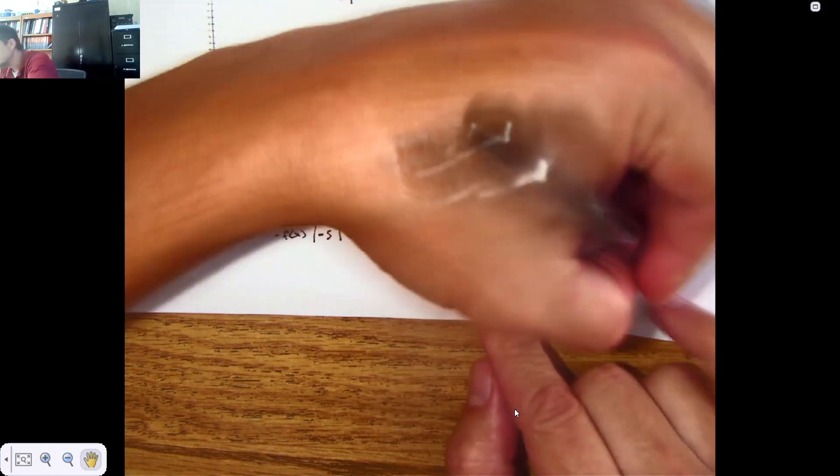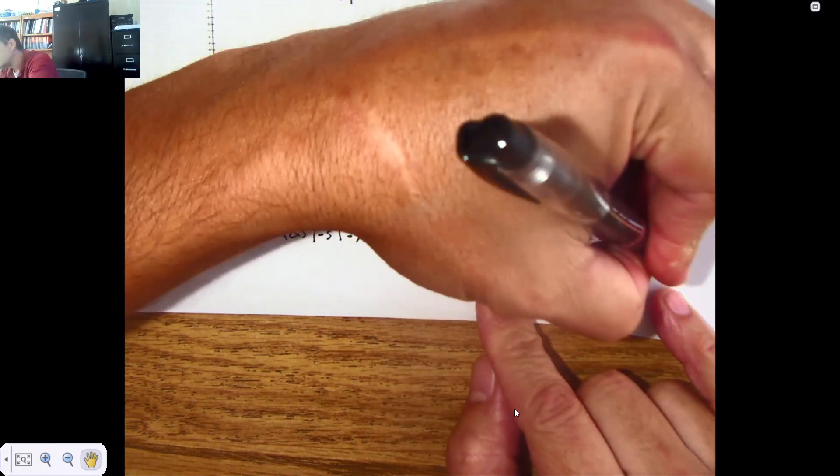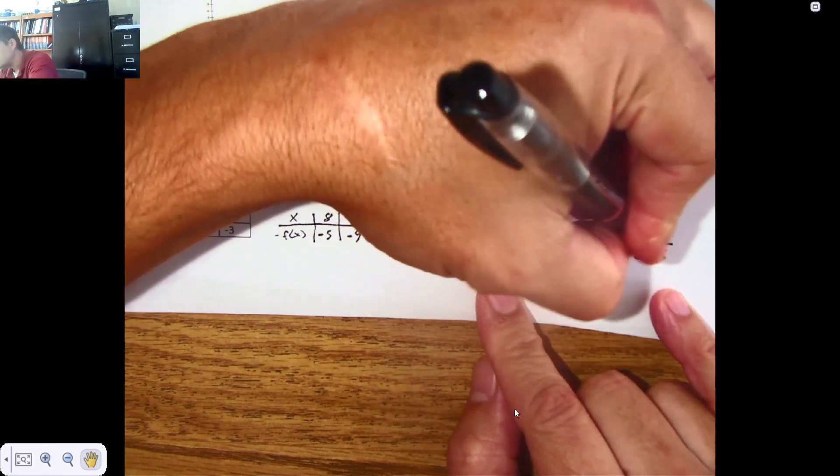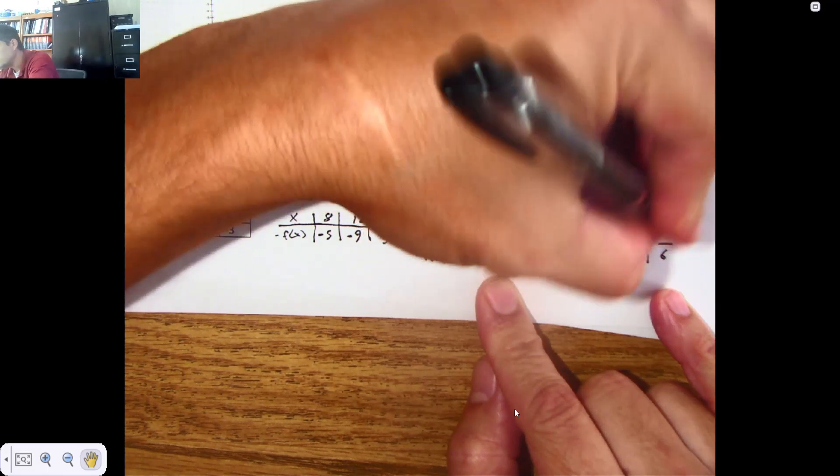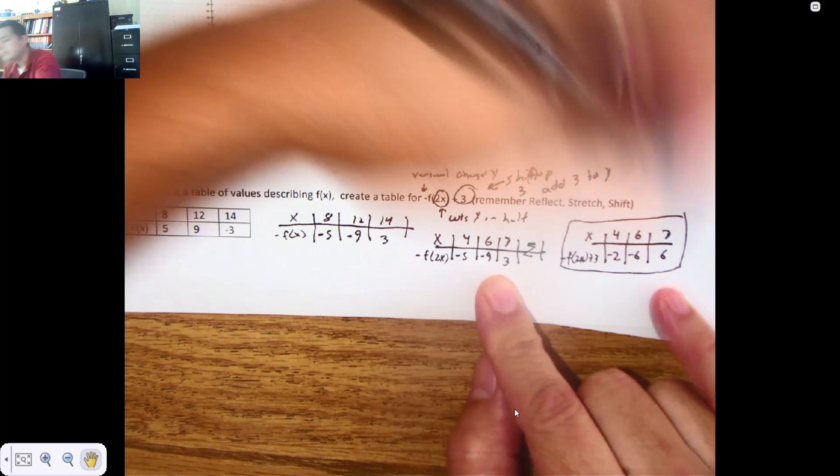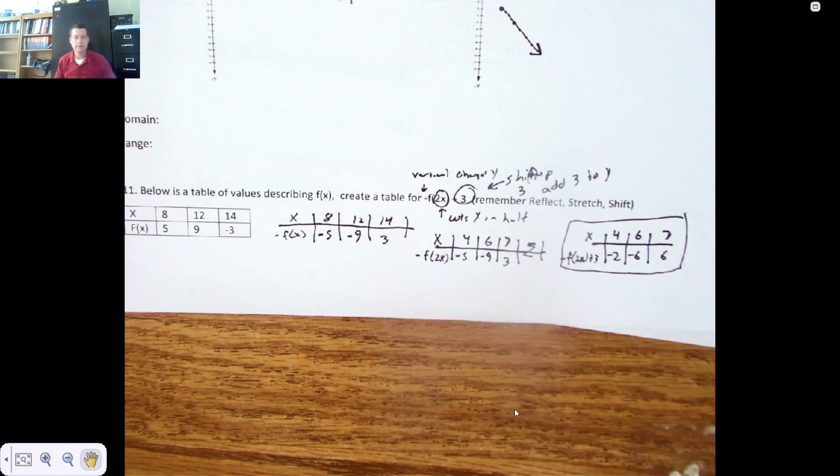It would be negative 2, negative 6, and then 6. And no effect on the input. And there is my table describing the transformation.